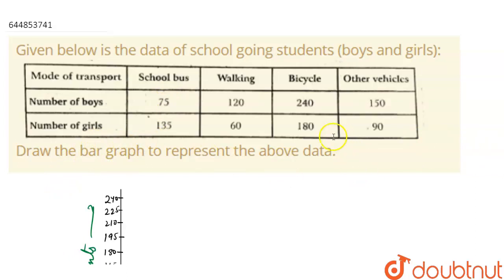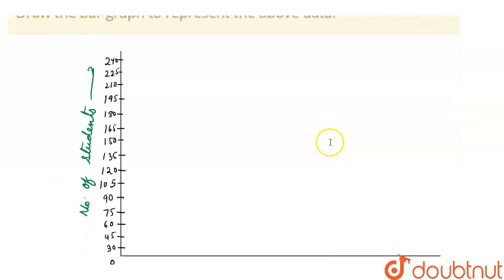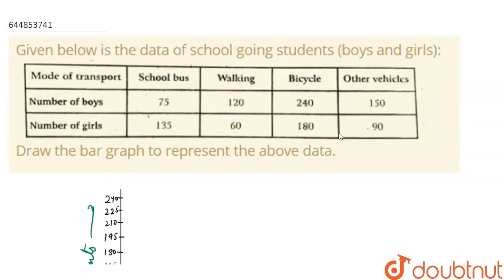So let's make our graph. I am taking green color to represent number of boys and blue color for representing girls.